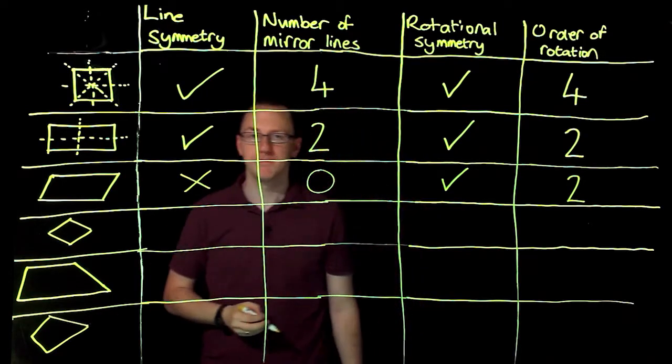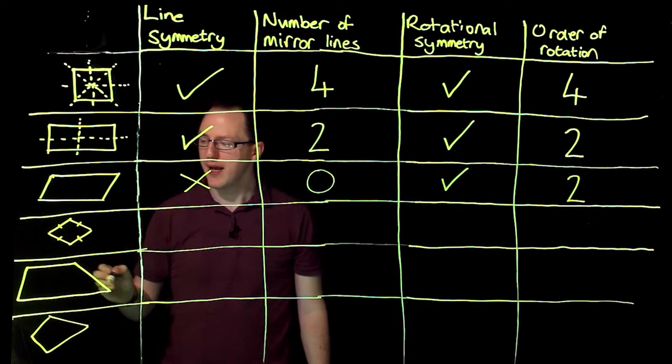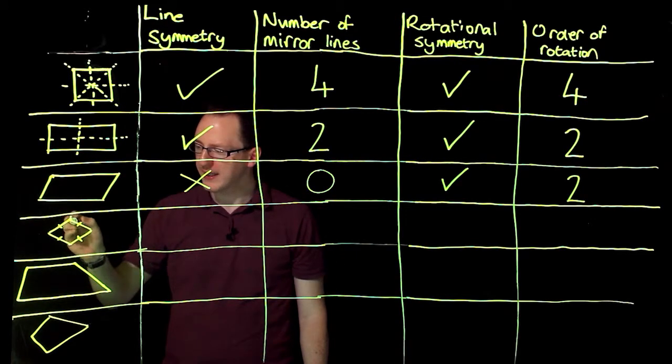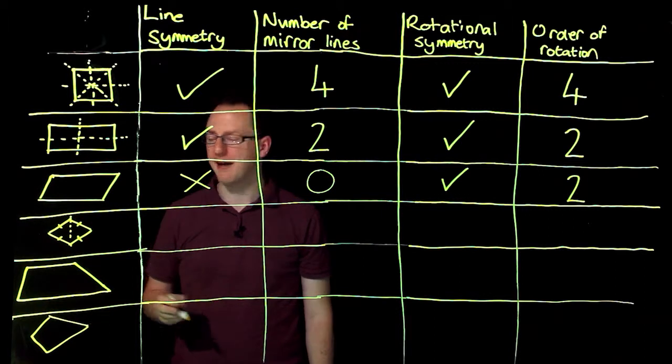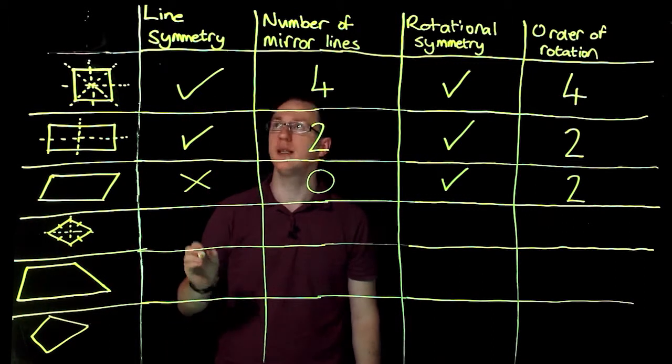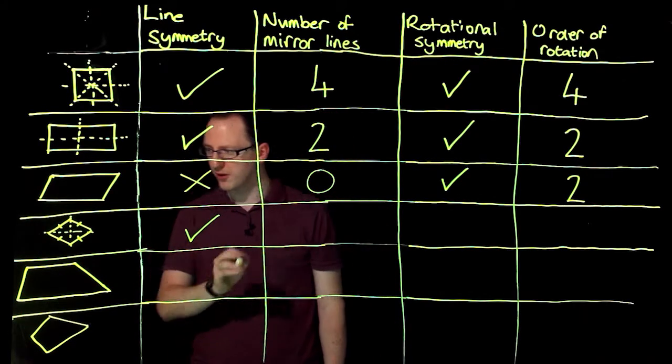Next I have my rhombus. My rhombus, remember, has four equal sides and opposite angles are equal. Well, because of that, I can split my rhombus in half in that direction and in half in that direction. So it does have line symmetry and has line symmetry of order two.